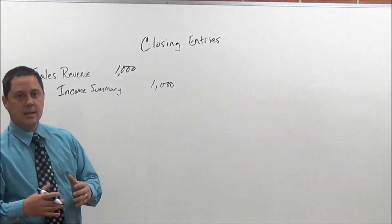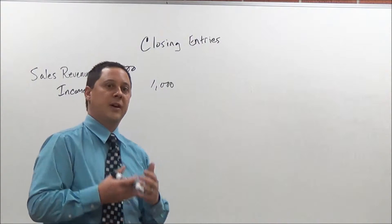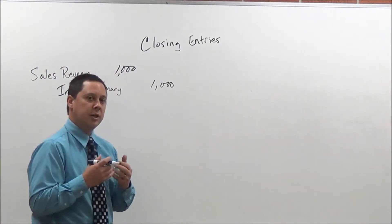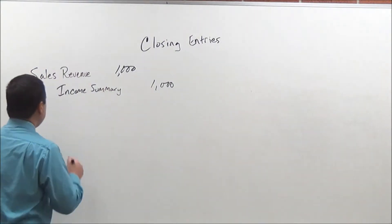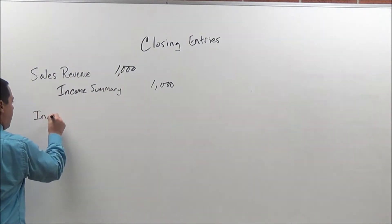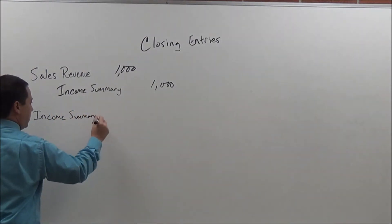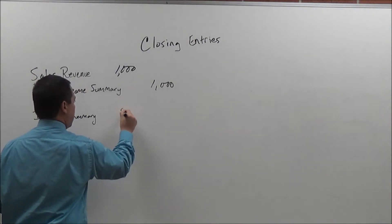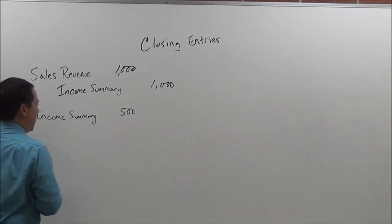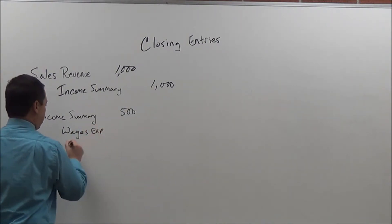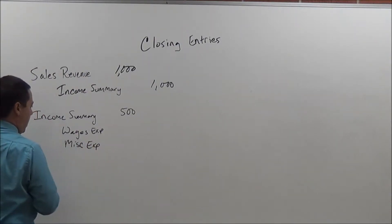So remember that in your debits and credits in that video, I went over expenses will have a debit balance. So what we're going to do then is credit those. So first I'll put an income summary here. So I am going to use this placeholder once again. And maybe we have $500 in expenses. And so my expenses could be wages expense, miscellaneous expense, and supplies expense.